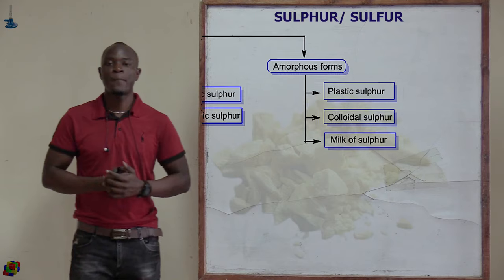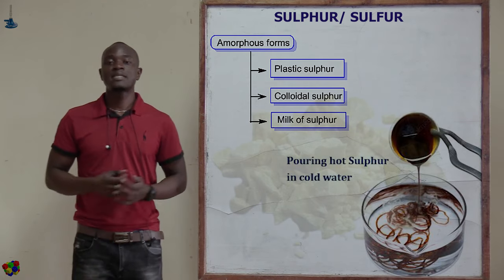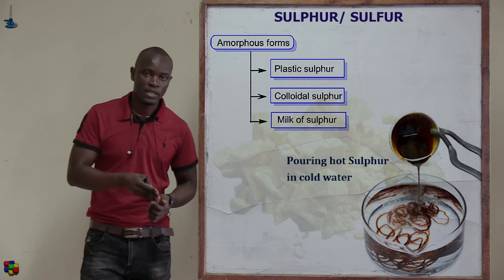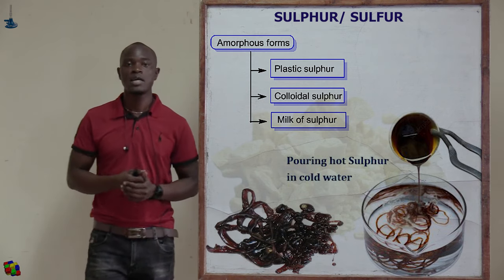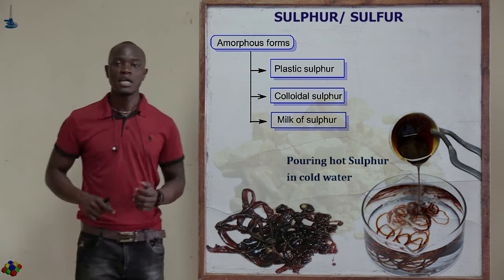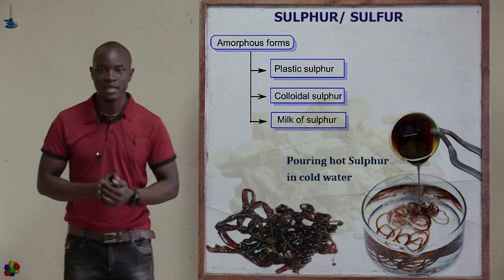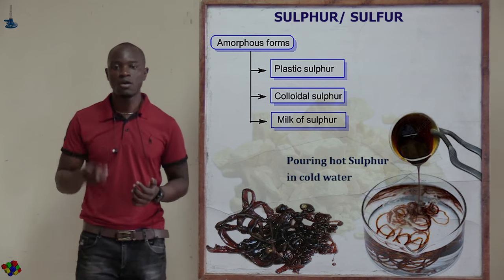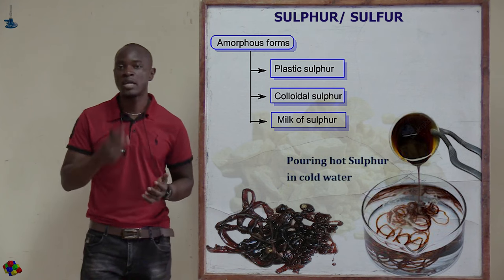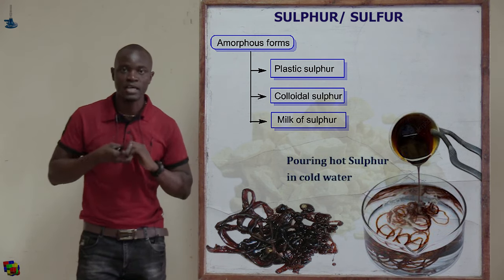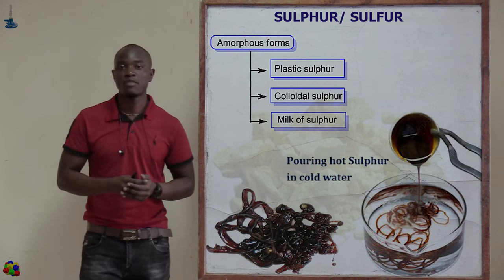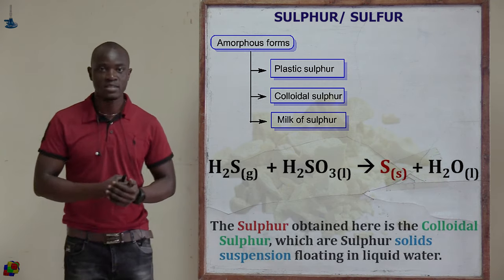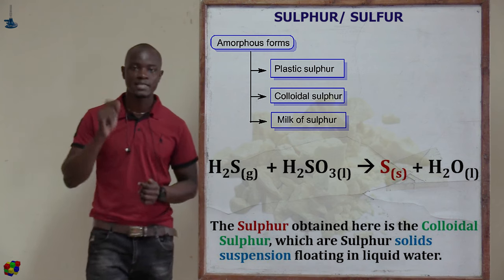The amorphous forms of sulfur include plastic sulfur, colloidal sulfur, and milk of sulfur. Plastic sulfur is obtained by pouring boiling sulfur into cold water. It is mainly composed of molecules that are long chains of sulfur atoms — very long chains of sulfur atoms joined together to form one long chain, referred to as plastic sulfur. The next amorphous form is colloidal sulfur.